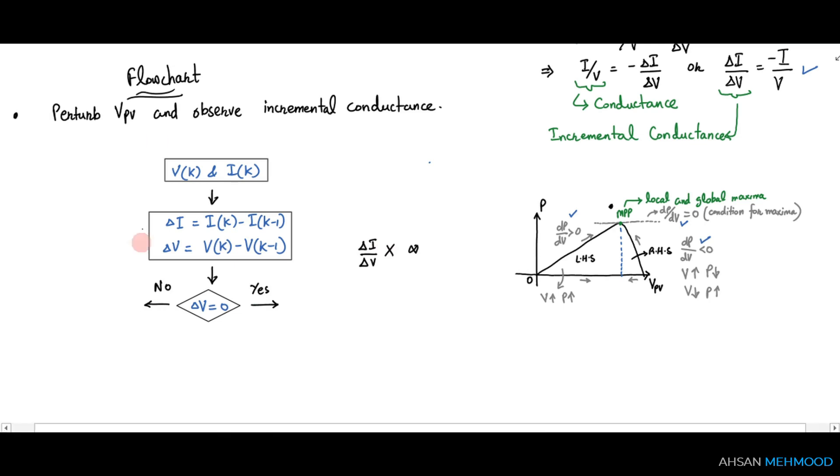Then we will see if this ratio is equal to minus i/v or not. In other words, is the incremental conductance equal to the negative of the conductance at the present point? If the answer is yes, then it means we are standing at MPP, which means we do not need to perturb any parameter. If the answer is no, then it means we are not at MPP.